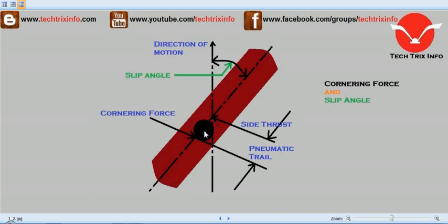This direction we can take as X and that is known as the pneumatic trail. The torque is equal to cornering force into pneumatic trail. That is the cornering force, and this is the pneumatic trail.